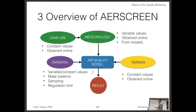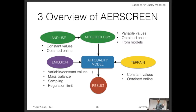Terrain data is constant and obtained online. Emission data is actually the most difficult part, because it's what makes your modeling project unique. For your project, I'll ask you to model one gram per second since you don't have actual emission data — that's fine for a first estimate. In practice, to run air quality models properly, you need actual emission values from sampling, mass balance, or you can use a regulatory limit as the worst-case scenario.